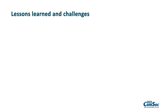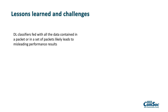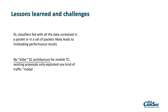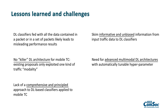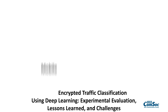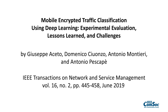This work has allowed us to shed light on several aspects of mobile encrypted traffic classification via deep learning. Indeed, using biased data can cause misleading performance results, usually inflated. Moreover, there is no killer deep learning architecture for mobile traffic classification, and we need to devise advanced multimodal deep learning architectures with automatically tunable hyperparameters. Finally, the evaluation of deep learning classifiers should take into account a comprehensive performance evaluation framework that provides both overall and per-class metrics.